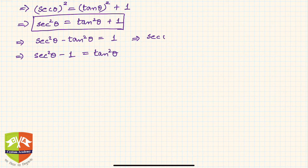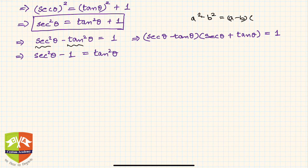secant theta minus tan theta times secant theta plus tan theta is equal to one, because if you see this is a squared minus b squared form. So a squared minus b squared is a minus b times a plus b, we know this. Similarly,